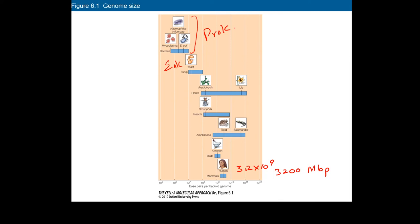But if you look at some other organisms — salamander, for example, or lily — very small organisms. Salamander is a very small organism, nothing compared with humans' size or complexity of its physiology. Lily is a plant. But their genome size is much bigger, actually several orders of magnitude different than humans. So they are smaller, less complex, but they are much more complex in terms of the genome — much more complex than humans.